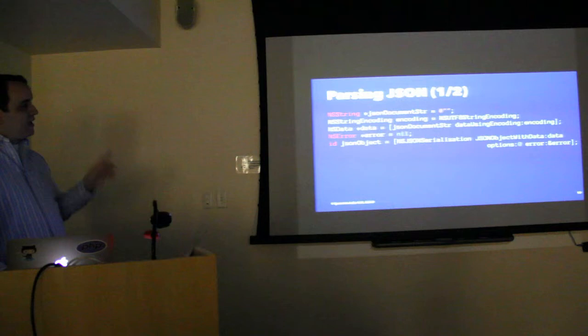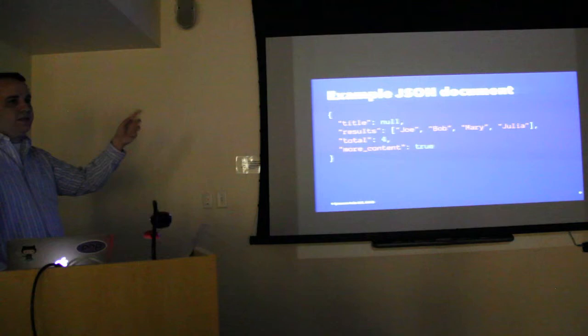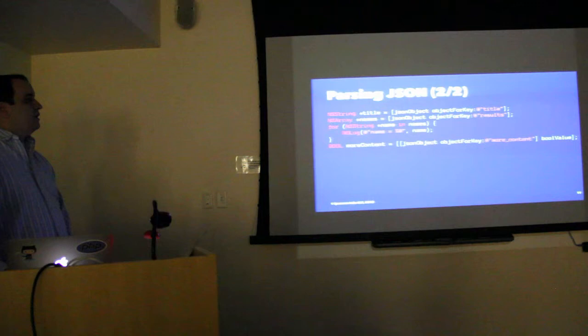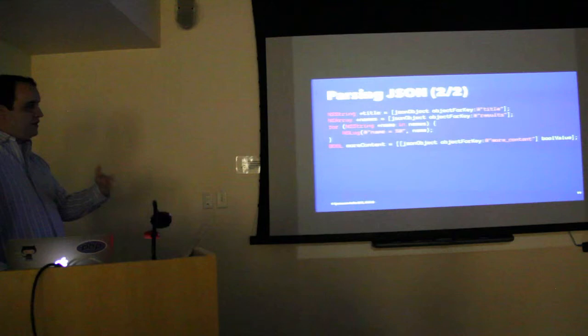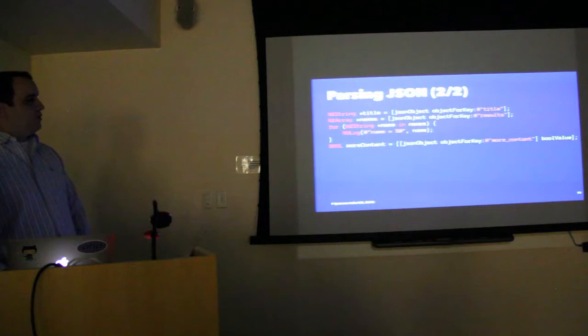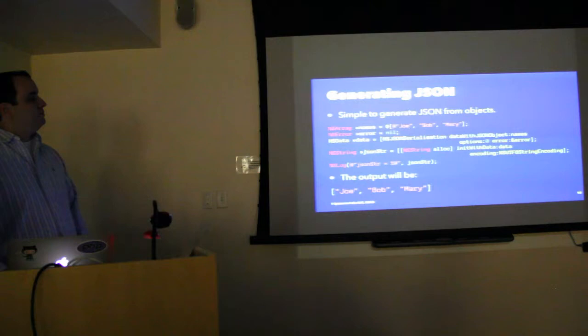Once parsed, you can use the JSON object — which would be a dictionary — to ask for the title, the list of names in the array, or the Boolean value from more_content. All of those things are parsed and available through this dictionary. This works because the outer object of the document is a dictionary. If it were just an array, you'd get an array back instead. This is how you parse JSON and deal with results from a remote API.